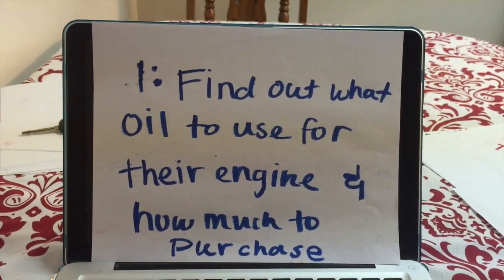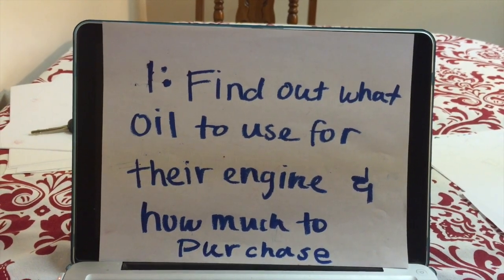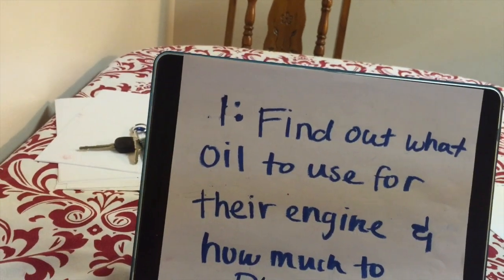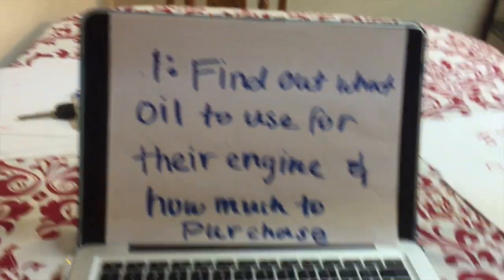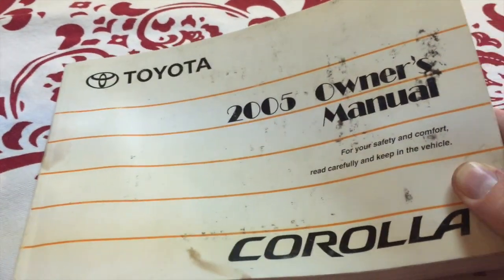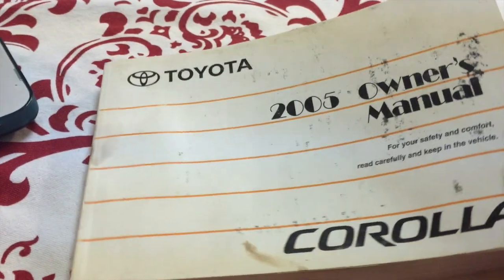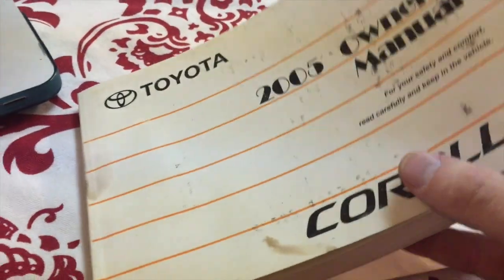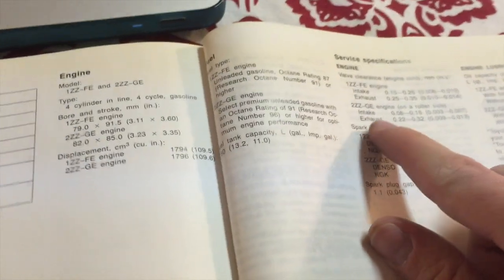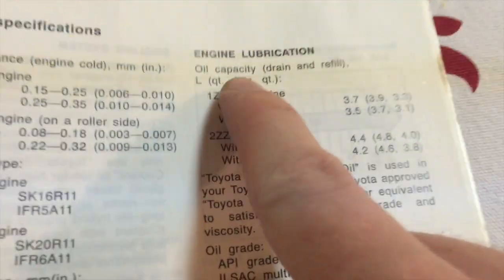The first objective is to find out what oil to use for your engine and how much to purchase. This is really easy. In the glove box of whatever car or truck you have, there's your owner's manual. My car is a 2005 Toyota Corolla, and in this owner's manual it tells you specifications for everything about your car — safety inspections, and what we're interested in: what kind of engine lubrication and how much.